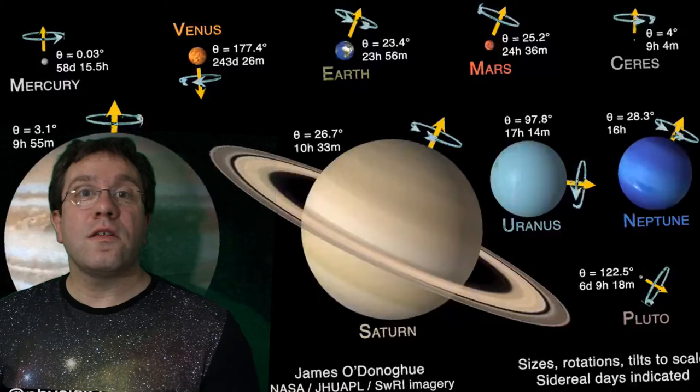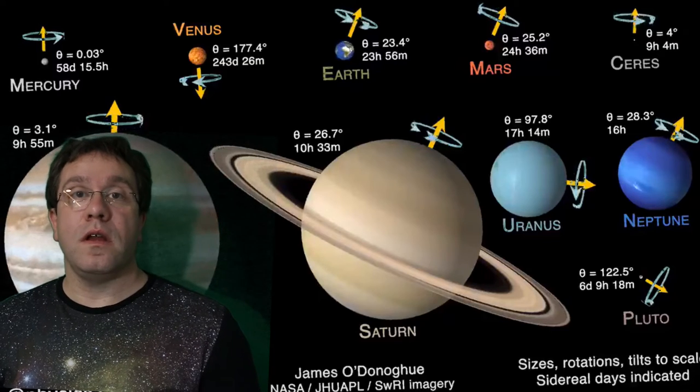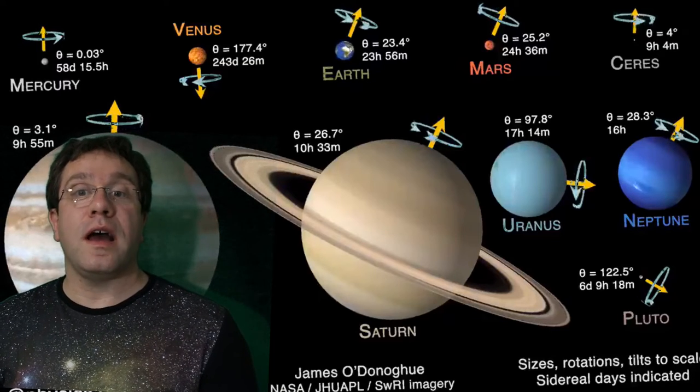Mars is almost the same. It rotates just half an hour more slowly than Earth, so 24 and a half hours.